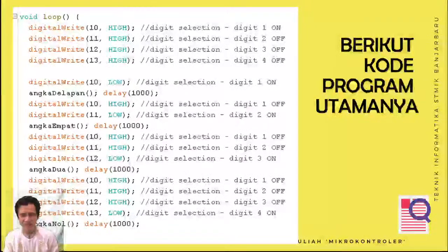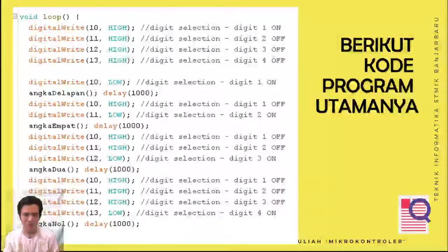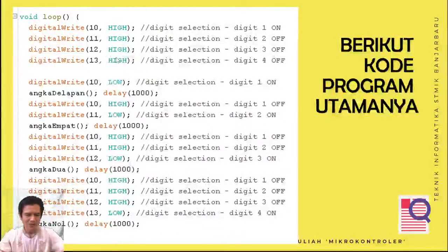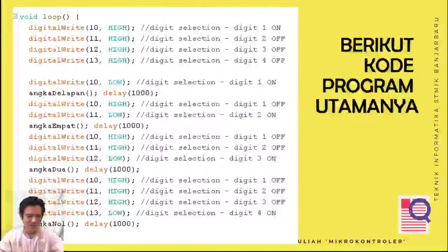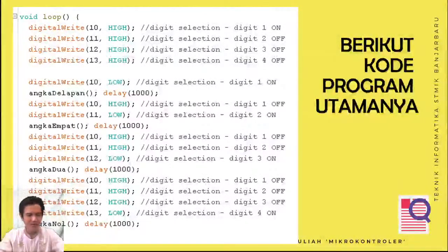Di coding program-nya — tadi yang kita ada 17 langkah di algoritma. Nah coding program-nya di void loop-nya ada kurang lebih 20 baris. Kurang lebih 20 baris ini dengan 17 algoritma tadi.